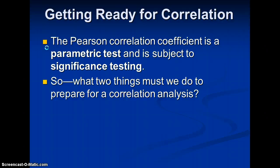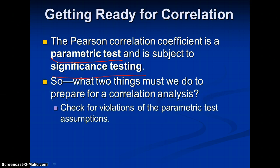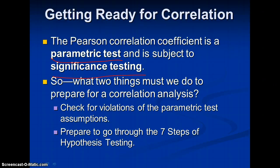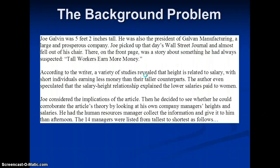How do we get ready for correlation? The Pearson correlation coefficient is a parametric test and is subject to significance testing. To prepare for a correlation analysis, we must check for violations of the parametric test assumptions and go through the seven steps of hypothesis testing. That is where we will start by looking at a made-up problem in the next screencast.